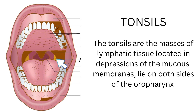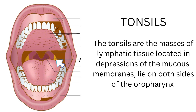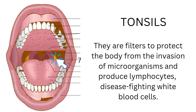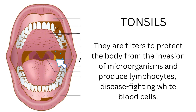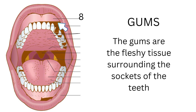The tonsils are the masses of lymphatic tissue located in the depressions of the mucous membranes that lie on both sides of the oropharynx. They are filters to protect the body from the invasion of microorganisms, and they produce lymphocytes — disease-fighting white blood cells.